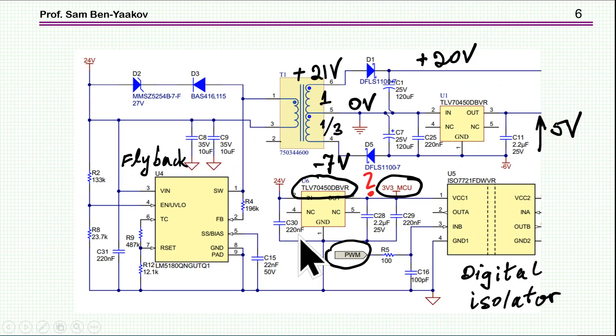So looking into the power supply, I see here a flyback. This is a flyback with a primary side control. There is no feedback here from the output to the input. It has a magnetic element with a split winding here. This one should be about 21 volt and this is a minus 7. And then you'll get this rail of 20 volt and this rail of minus 6 volt approximately.